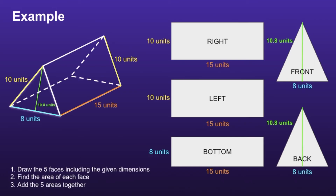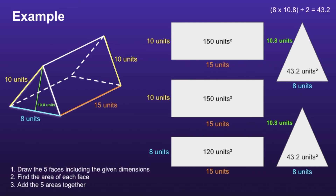Step 2: find the area of each face. For the right and left rectangular faces, both have a base of 15 and a height of 10, so using the formula base times height, 15 times 10 is equal to 150. For the bottom rectangular face, using that same formula, 15 times 8 is equal to 120. And finally, for the two triangular faces, using the formula base times height divided by 2, 8 times 10.8 divided by 2 is equal to 43.2. So the area of each of these triangles will be 43.2.